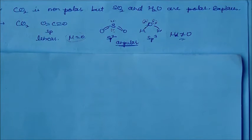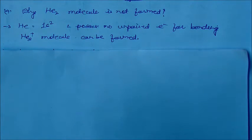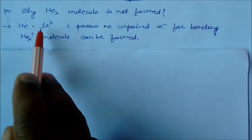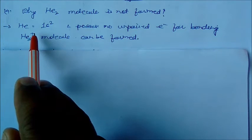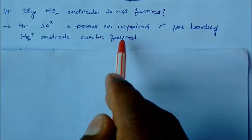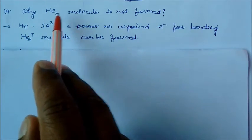Why is helium molecule not formed? It is easy. We can see helium, if you take helium atom, it is 1s2 and possesses no unpaired electrons for bonding. But helium single positive molecule can be formed because it has one unpaired electron. So this has no electrons, this is not formed, but this molecule can be formed.